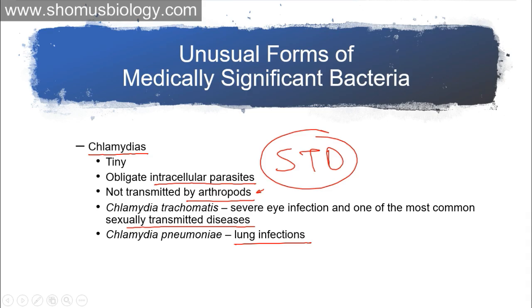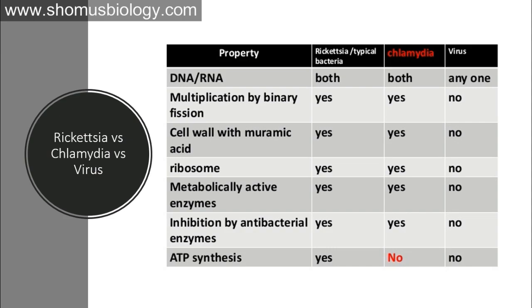These unusual forms of bacteria — Rickettsia and Chlamydia — are important, and we have already talked about Mycoplasma earlier. For competitive exams like PhD entrance, MTech, and IIT exams, you should prepare these portions. You need to know a table explaining the variety of Chlamydia, Mycoplasma, and Rickettsia species, their associated diseases, and what those diseases actually are — that is very important.